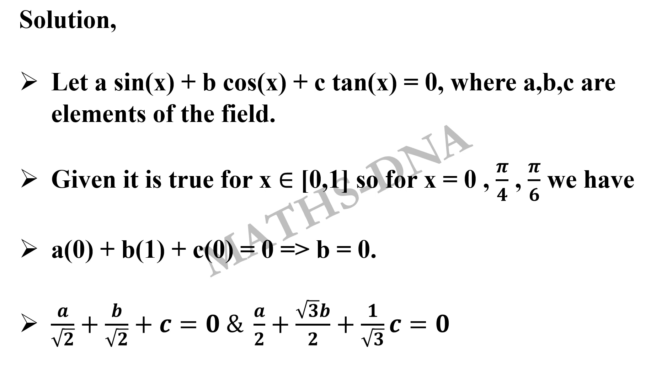...we have a/√2 + b/√2 + c = 0 and a/2 + (√3·b)/2 + c/√3 = 0. Now as we have already found that b = 0, we eliminate the second term in both equations.